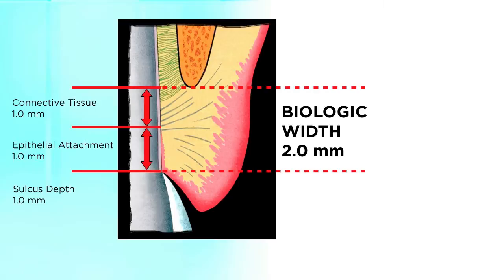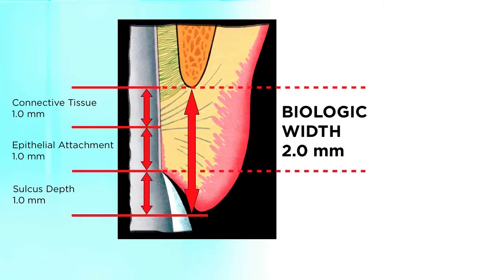The epithelial attachment is also one millimeter in height. In 1962, D. Walter Cohen called these two combined — epithelial attachment and connective tissue attachment — the biologic width. We know the body won't recede into the biologic width. When tissue recedes, what recedes is coronal to the biologic width. The typical person has about a one millimeter sulcus, and Gargiulo, Wentz, and Orban said the average person has about three millimeters of total gingiva above bone. If that's your patient, recession is not going to occur — or if it does, it will be very temporary, and the tissue will actually grow back. Even if you were to cut the tissue off to bone, the body is going to regrow the connective tissue, regrow the epithelium, and regrow a sulcus.